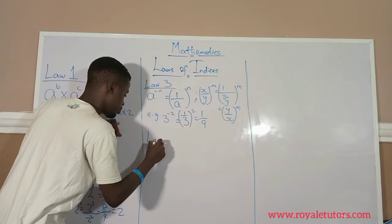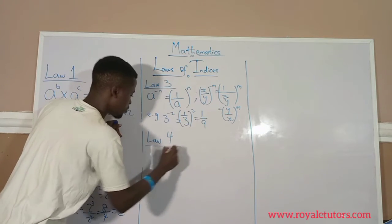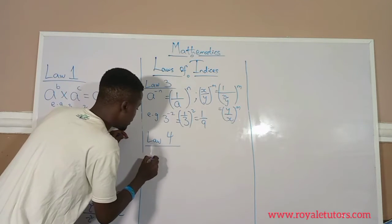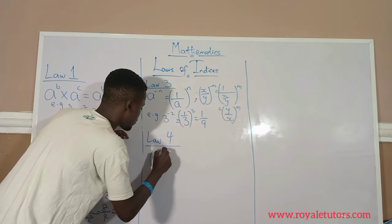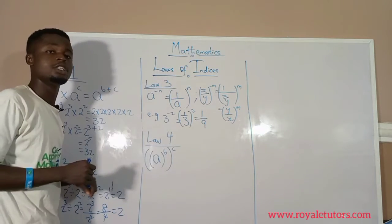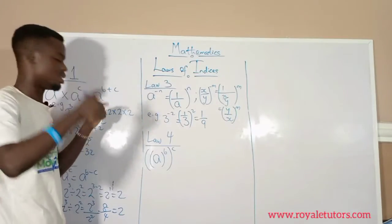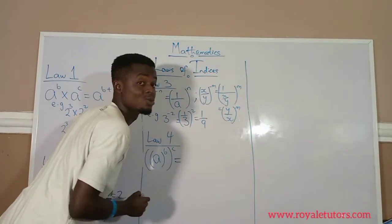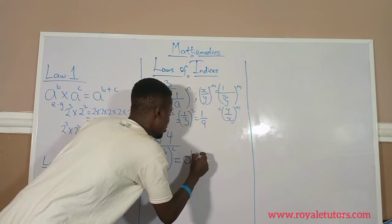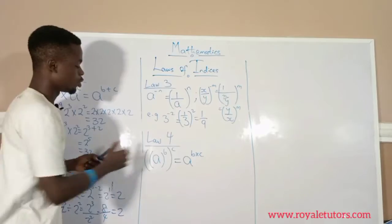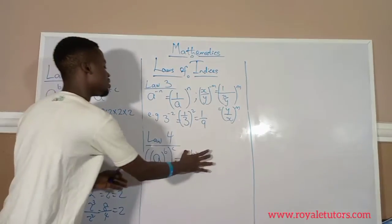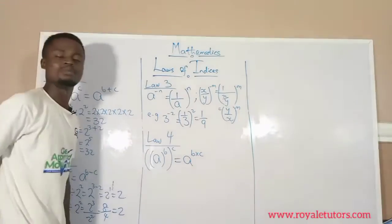Law 4: what if you have something like a raised to power b, all raised to power c? Don't be scared — it is the same thing as a raised to power b multiplied by c. You just multiply the powers together. Even if there are 3 powers, you multiply all 3 together. There is still just one base.